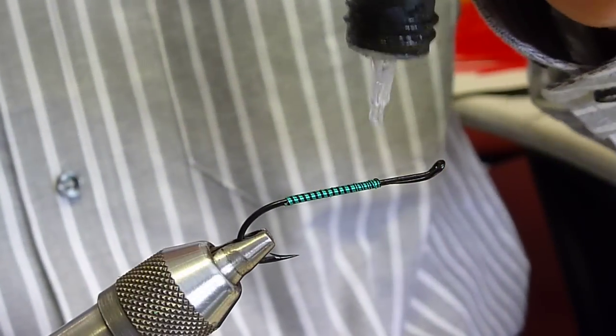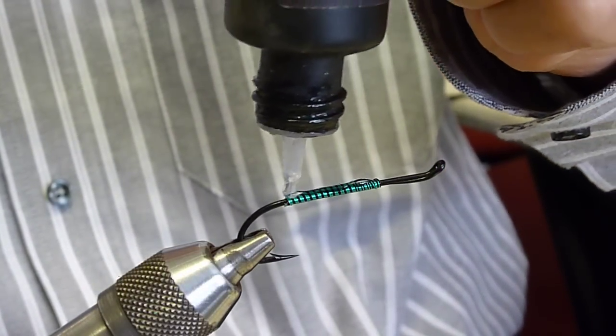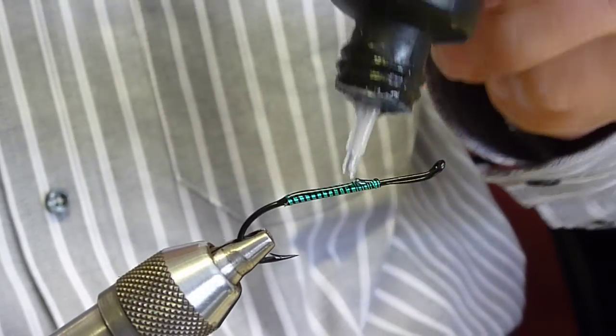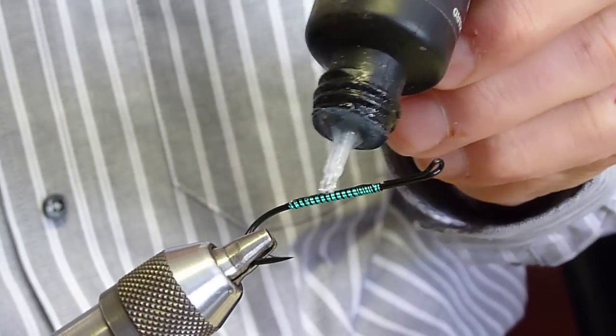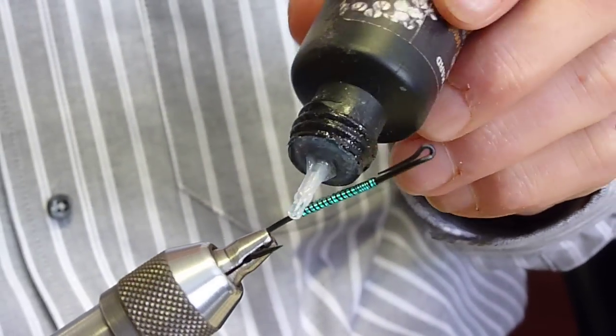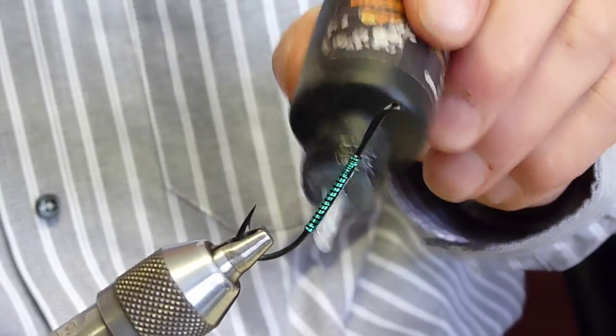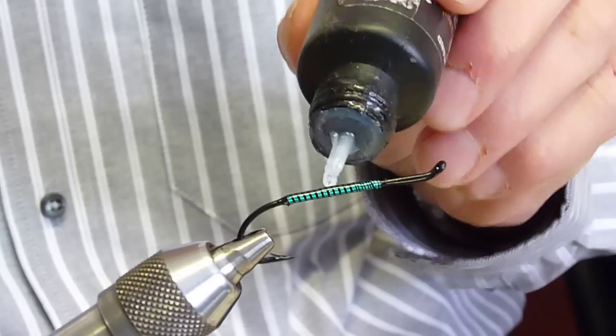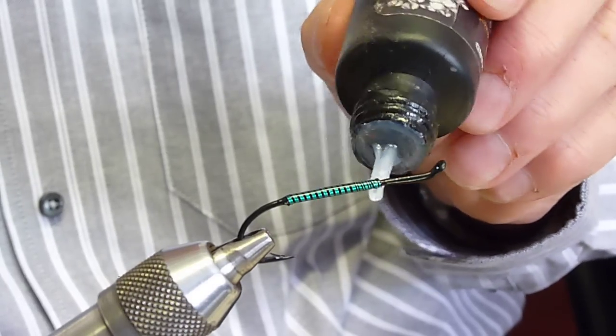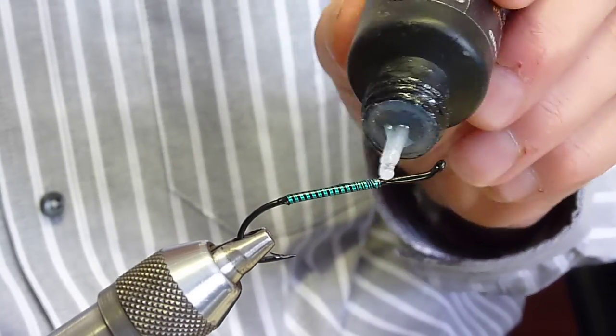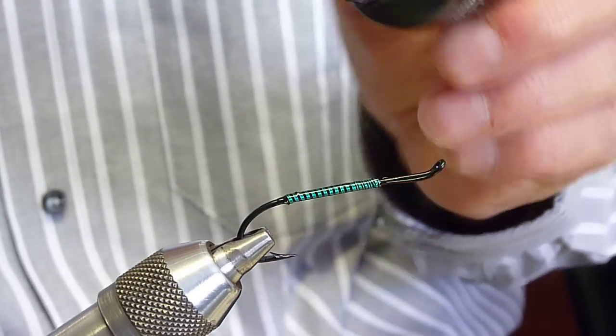So what we're going to do on this one here, we're just going to put the resin onto the body and we're going to work at this just around. What this is going to do is it's going to encapsulate that wire onto the hook. Also it just highlights the body as well.